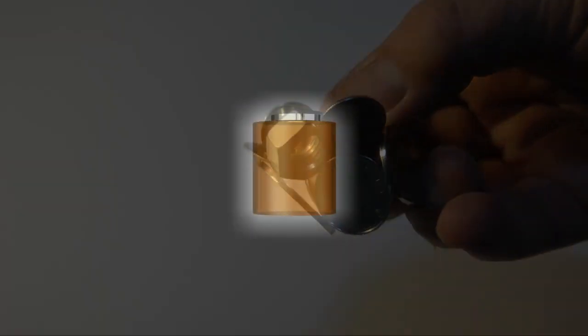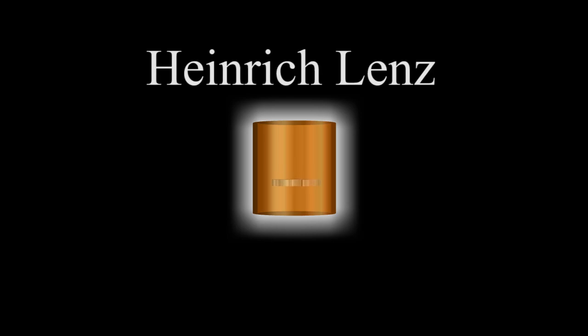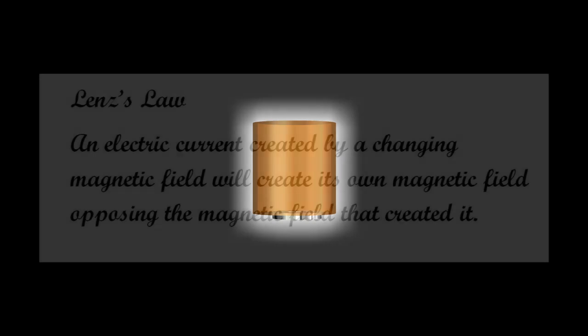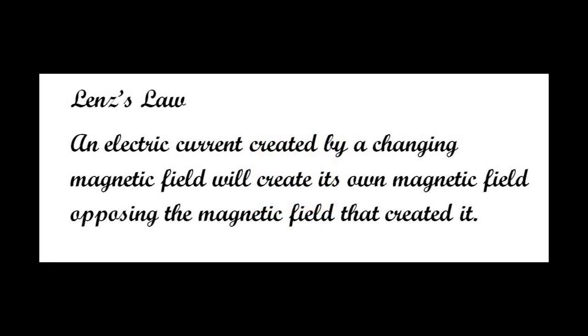The science behind this phenomenon was first described in 1833 by physicist Heinrich Lenz. This description is known as Lenz's Law. Simply stated, it says: An electric current created by a changing magnetic field will create its own magnetic field opposing the magnetic field that created it.